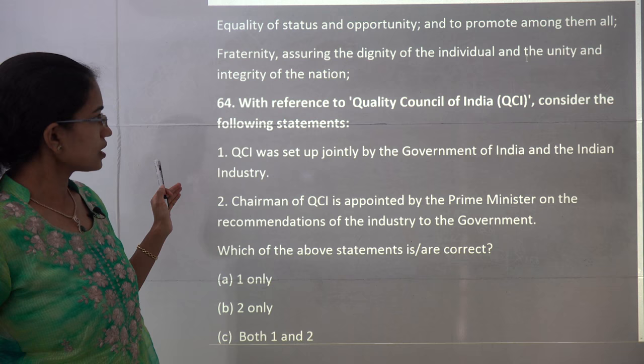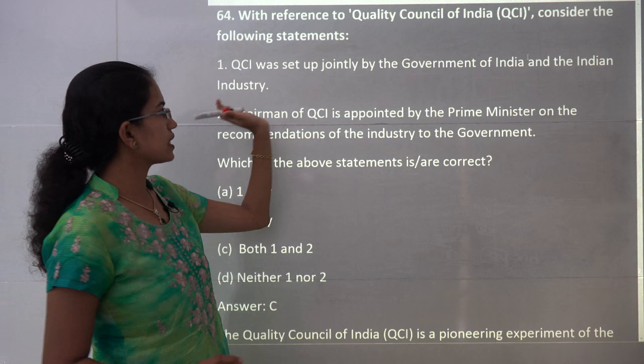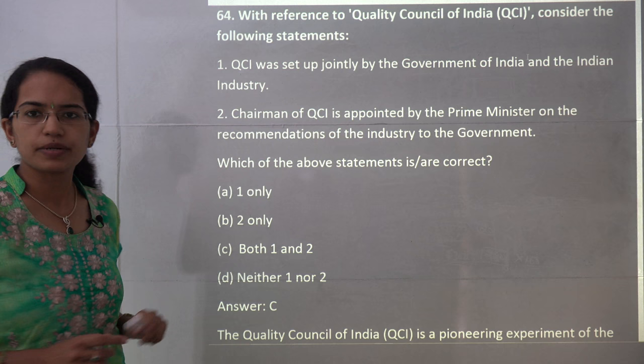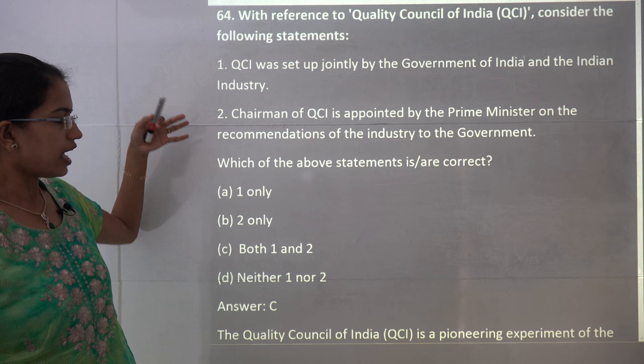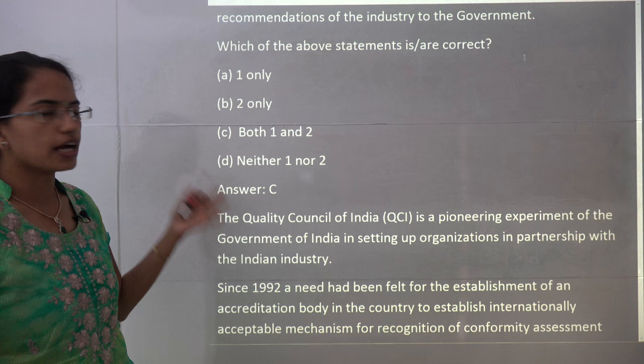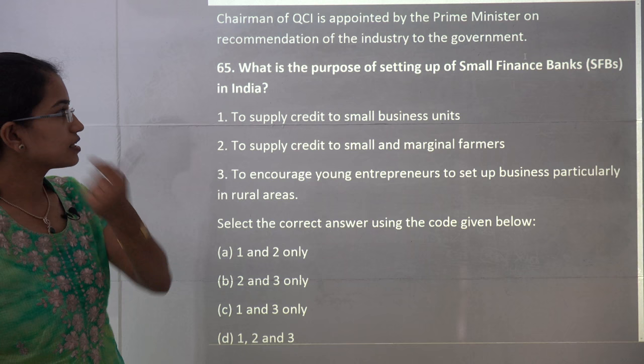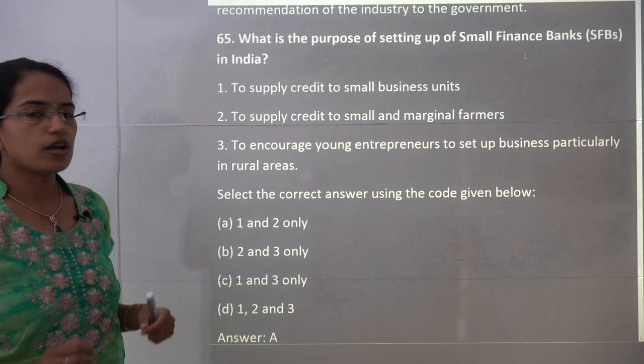The next question is about the Quality Council of India. It was jointly established by the Government of India and Indian industries — that is correct. Its chairman is appointed by the president on the recommendation of the industry to the government — that is also correct. Both statements are correct, and this is a government partnership initiative to maintain quality standards.